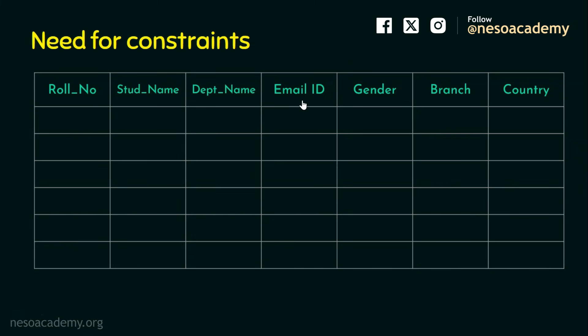Coming to the email ID, a student may or may not have an email ID, so this depends on the requirement. Coming to the gender column, as mentioned earlier, a gender entry can be male, female, or transgender. For example, if the data type chosen is char — meaning a single character is allowed — then M means male, F means female, T means transgender. Suppose any insert operation is carried out with a value apart from M, F, or T, then that particular insert operation will be aborted, because we have enforced the constraint to accept only M, F, or T.